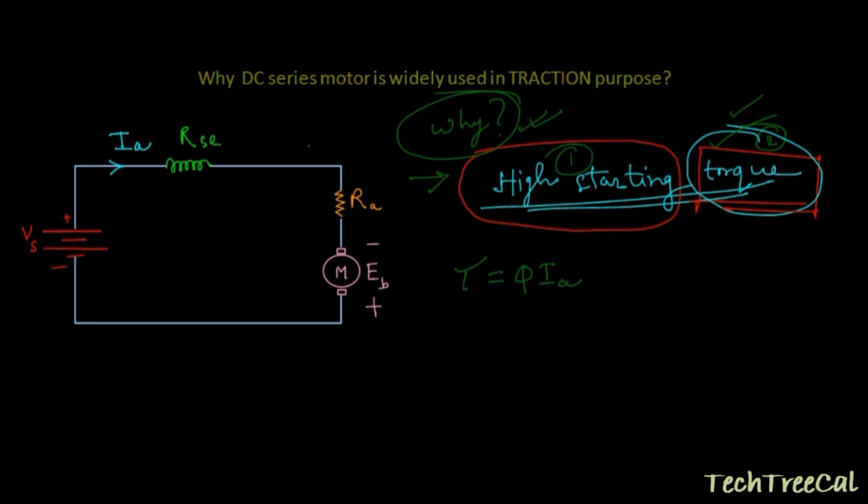Now in DC series motor the series coil is in series with the supply, so the current passing through the series coil is the armature current. So the flux producing in DC series motor is proportional to armature current.